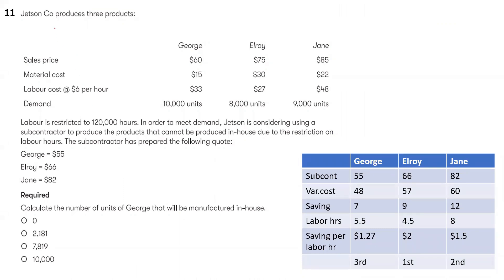For this question, we have three products: George, Elroy, and J.E. Labor is in short supply — only 120,000 hours. Again, the same dilemma: producing in-house, subcontracting, or buying out.